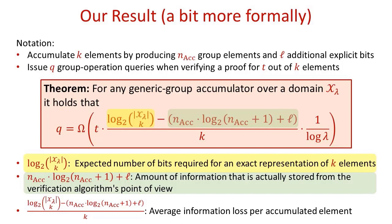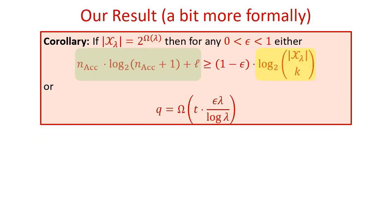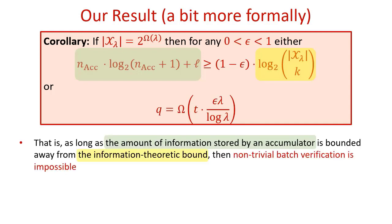Our theorem states that the number Q of queries issued when batch verifying a proof for a subset of size T is at least T times the average information loss per accumulated element times 1/log λ. In particular, consider the case where the size of the domain is exponential in the security parameter, which is indeed the case for the known accumulators in RSA and bilinear groups. Then either the amount of information stored by an accumulator is almost trivial, or the number of queries issued when batch verifying T elements is at least T times λ/log λ. In other words, if the amount of information stored by an accumulator is bounded away from the information-theoretic bound, then non-trivial batch verification is impossible.